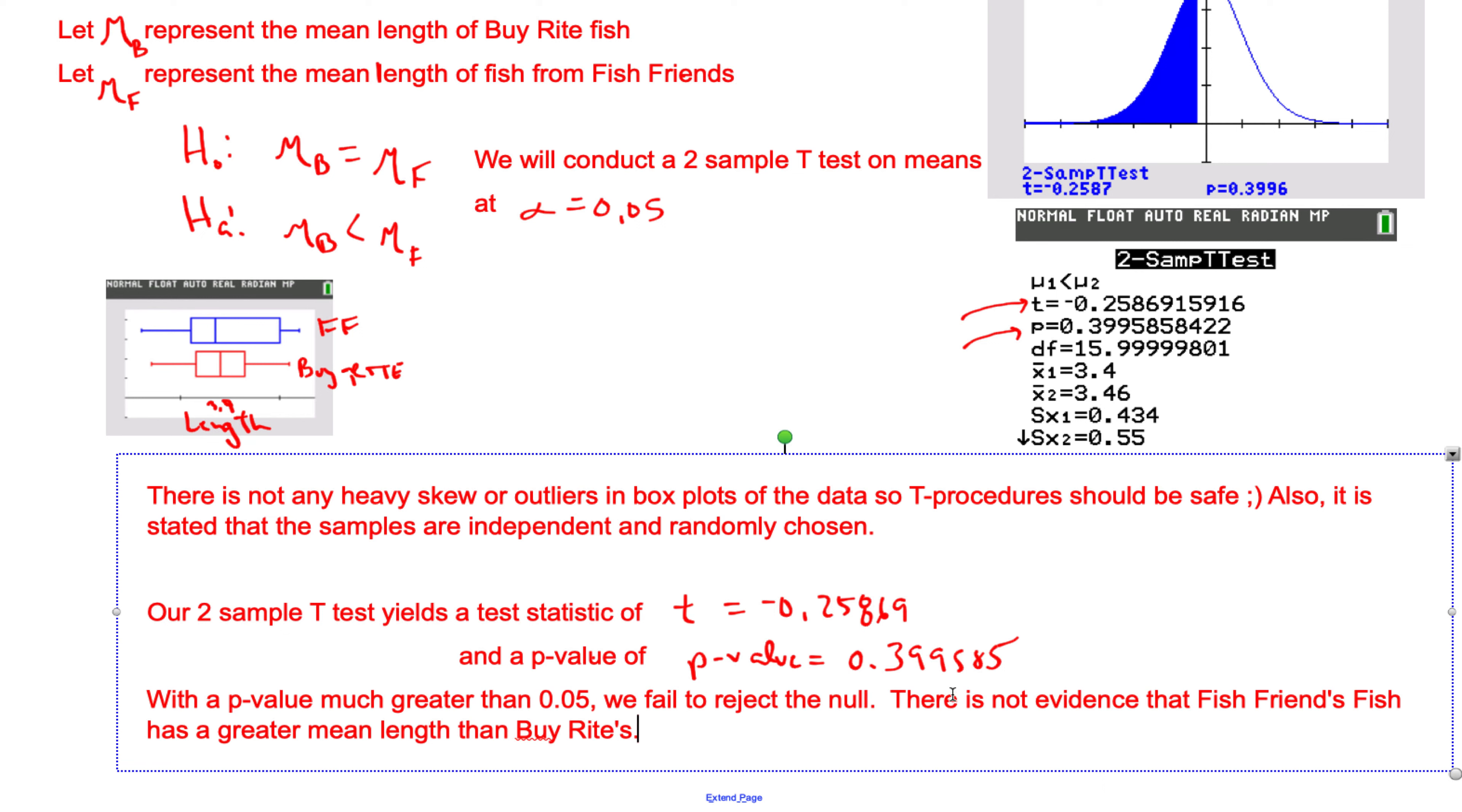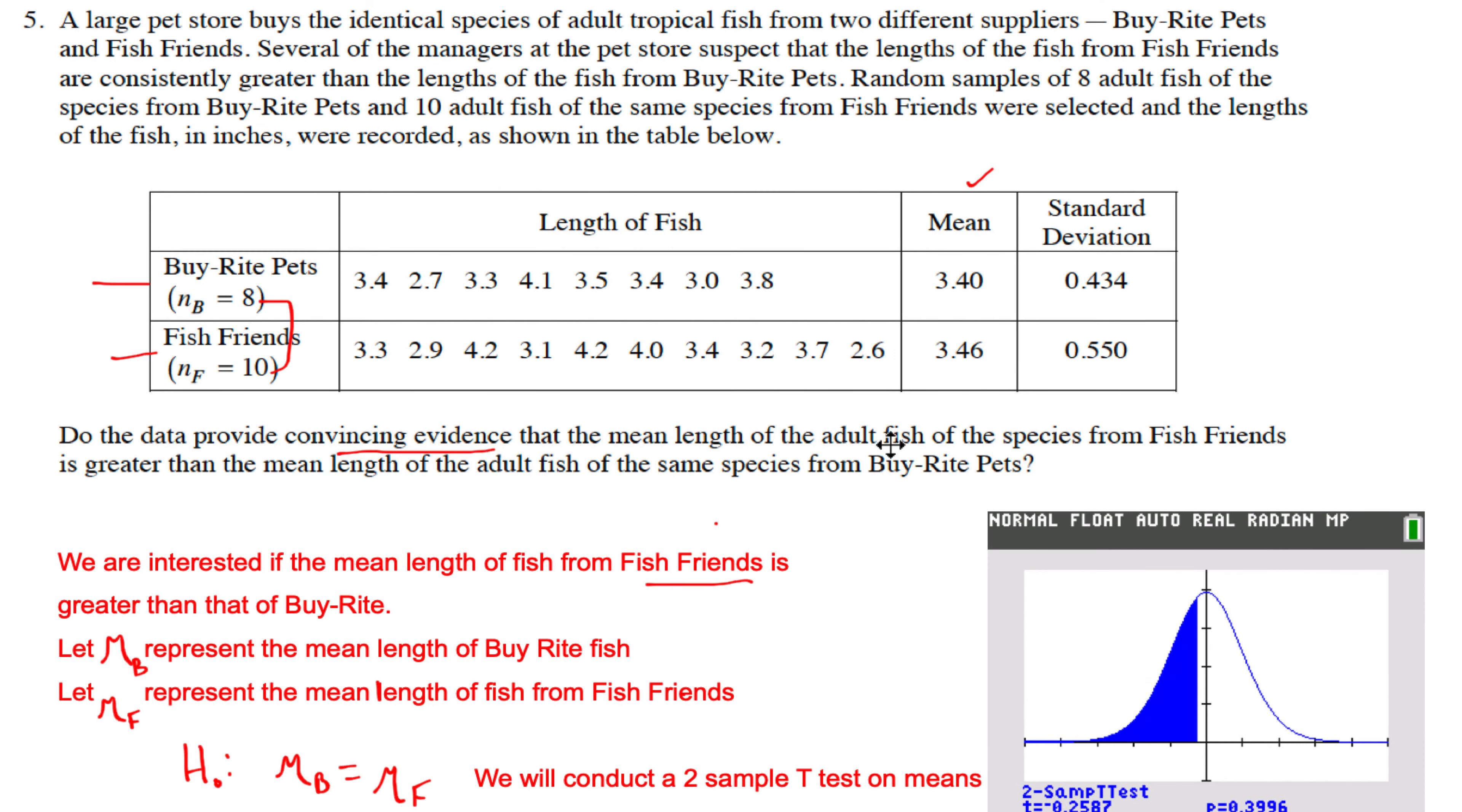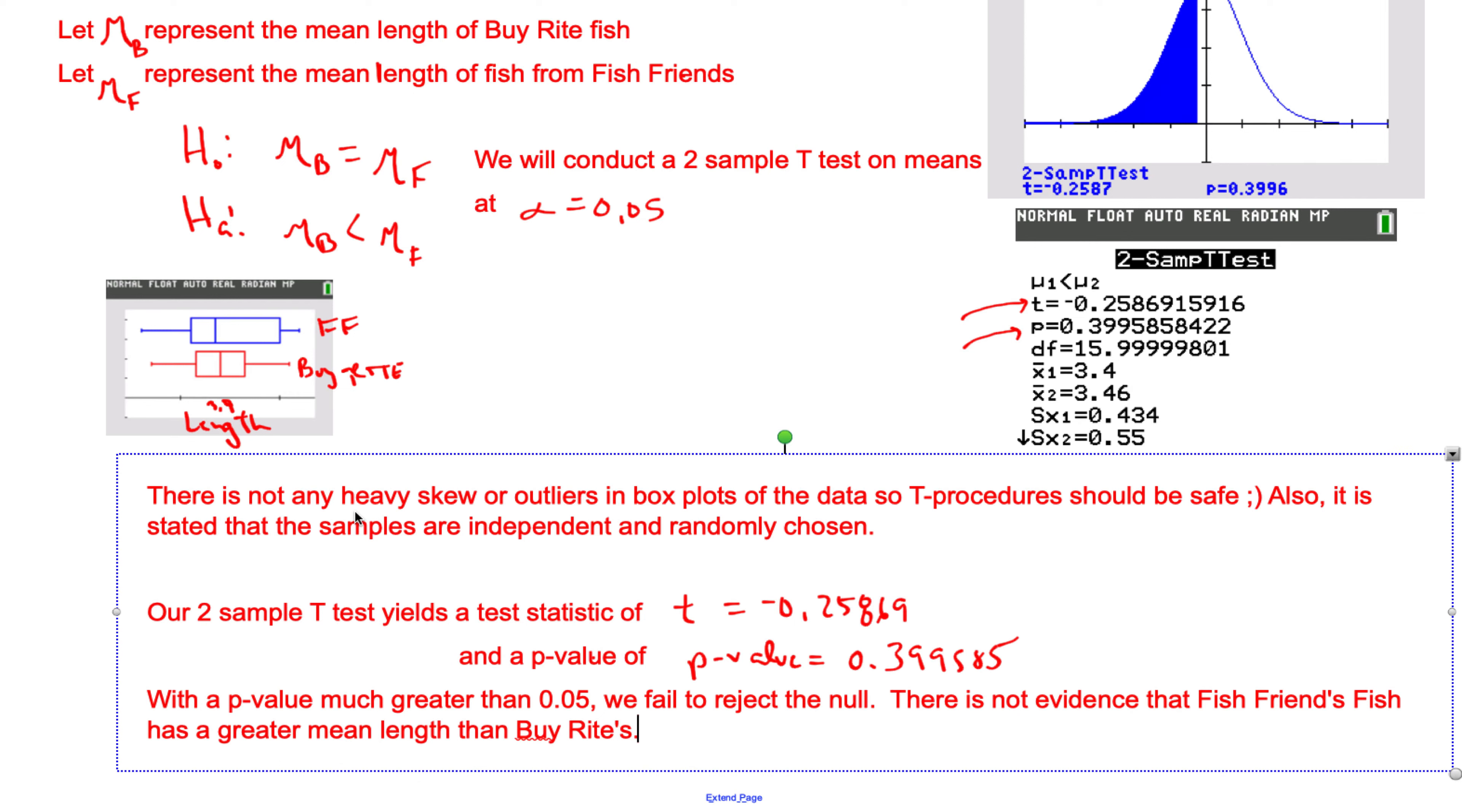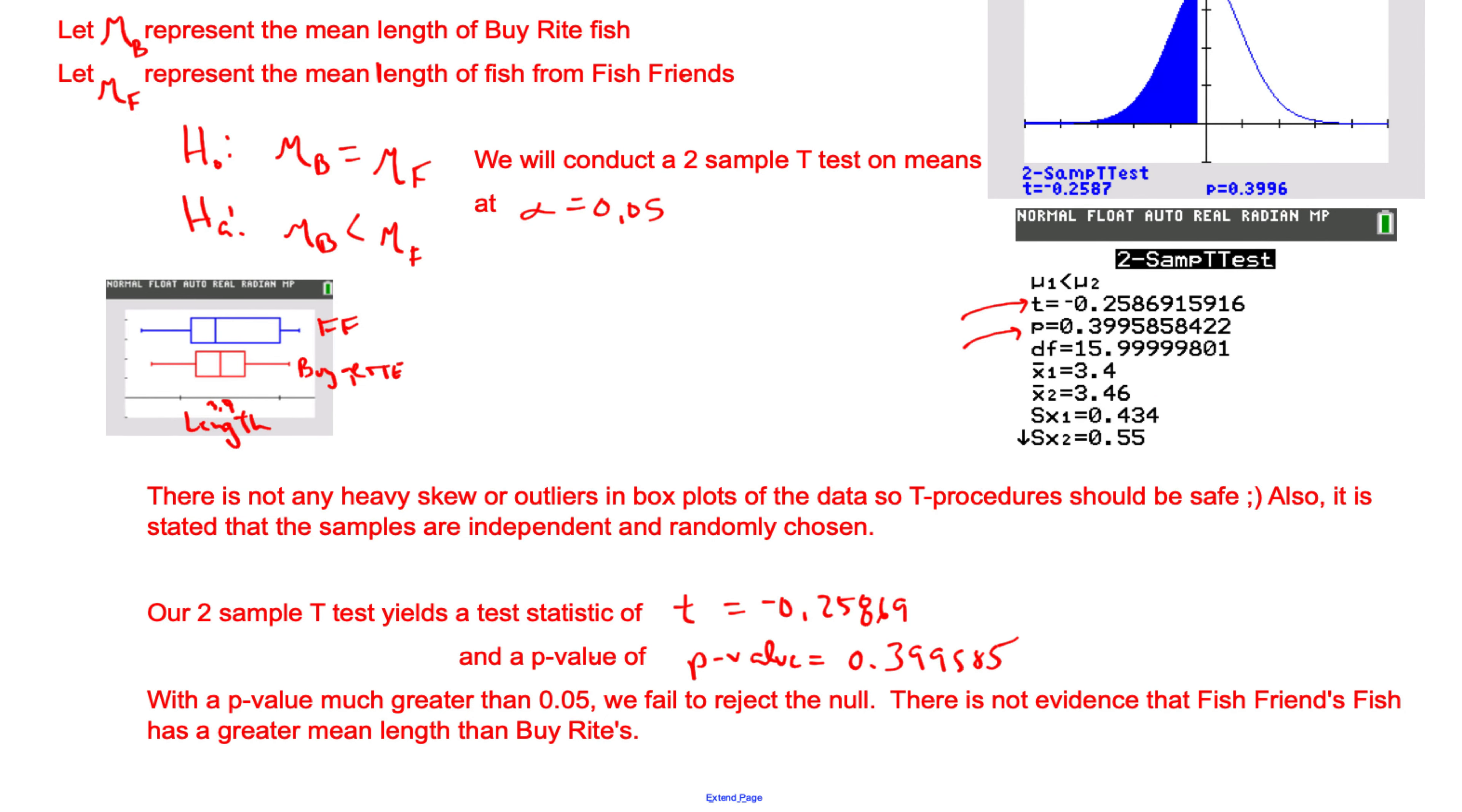So we can write this up: with a p-value much greater than 0.05, we fail to reject. There is not evidence that Fish Friends fish has a greater mean length than Buy Rite's. I always go back to the question: Is there convincing evidence that the mean length is greater? Answer the question: there's not evidence. Done, perfect. Now, did I write the formula? No, I did not.